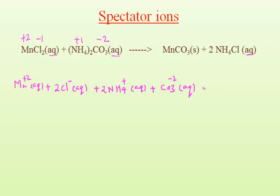On the product side, we have manganese carbonate. It is in solid state, which means it is a precipitate and it does not dissociate into ions — we write it as MnCO₃ in the same solid state. The next product is ammonium chloride, which is in aqueous state, meaning it dissociates into ions in aqueous solution.